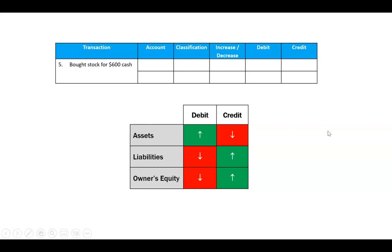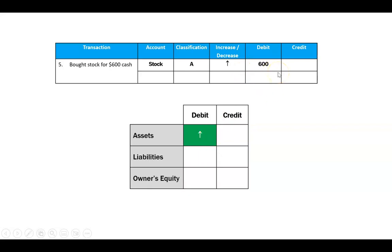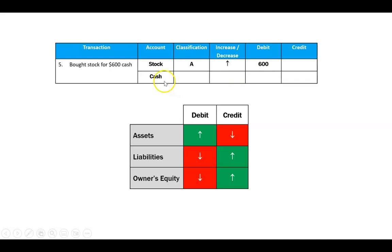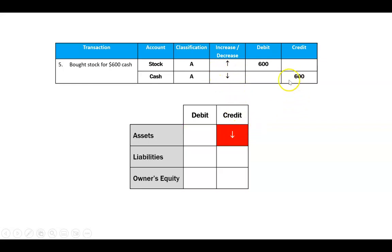Transaction number five: bought stock or inventory — we'll call it inventory for the rest of the year — for $600 cash. I now have an asset called stock; I have more of it, so it's increasing, and my rule says that should be a debit here. Every debit needs a credit, so in this case I had to give up cash. Cash is an asset, and because I had to give it up, that's decreasing, so the rule says that would be a credit. One debit, one credit.